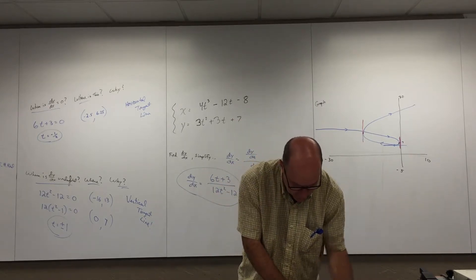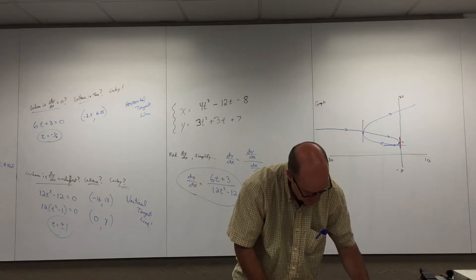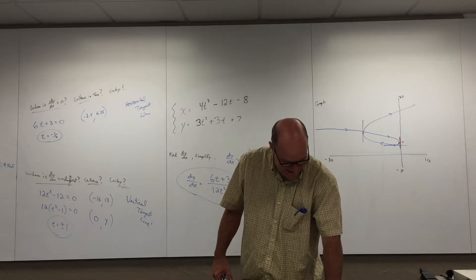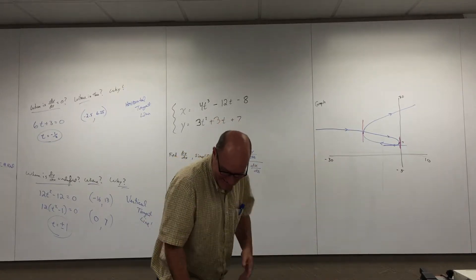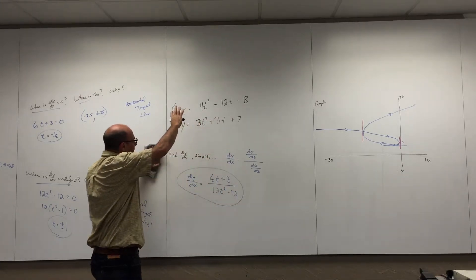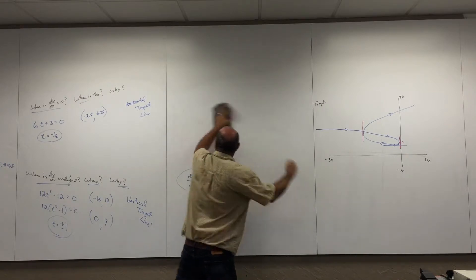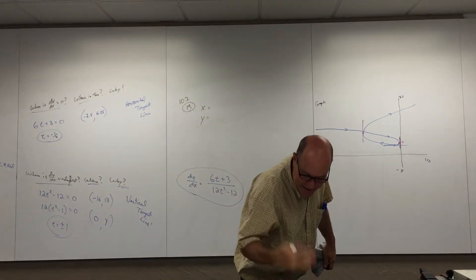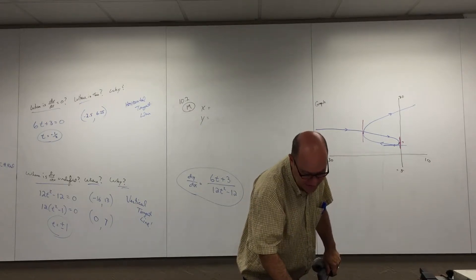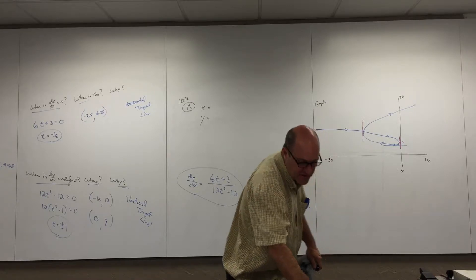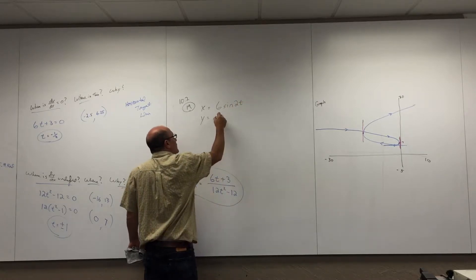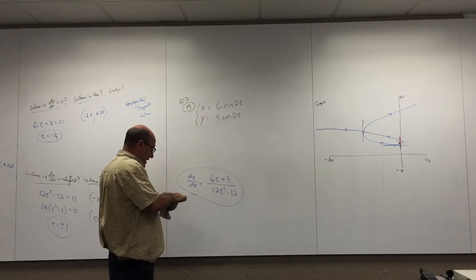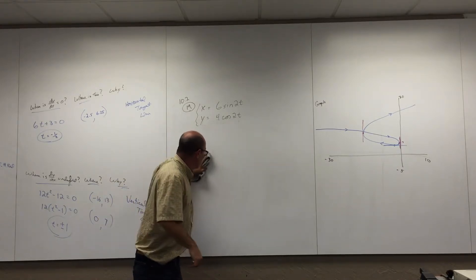Let's look at 10-2 number 19. They gave these parametric equations using theta, but I prefer t. So: x = 6 sin(2t), y = 4 cos(2t). This is good and classic. We had a big discussion on this Friday. The question wants me to graph it using a graphing utility, eliminate the parameter and write the corresponding rectangular equation, and show the orientation of the curve.